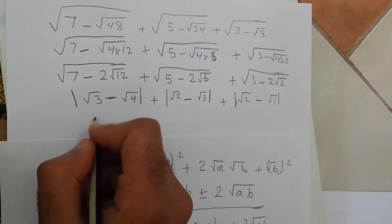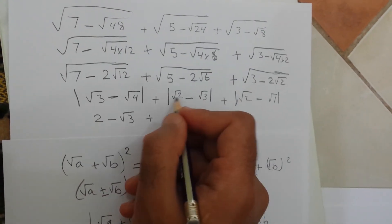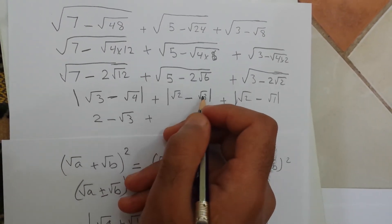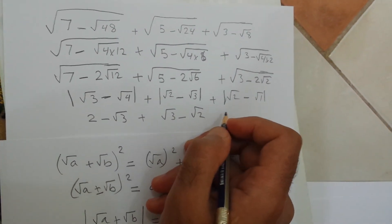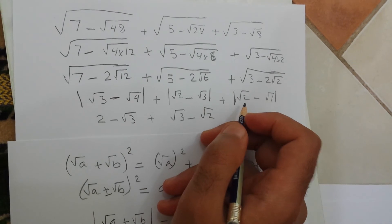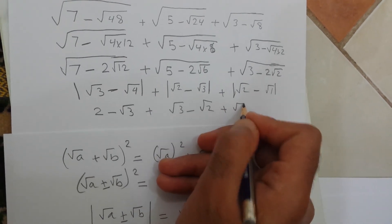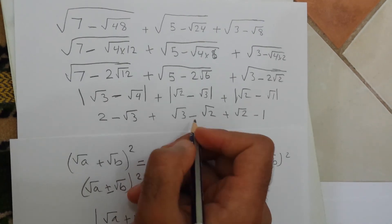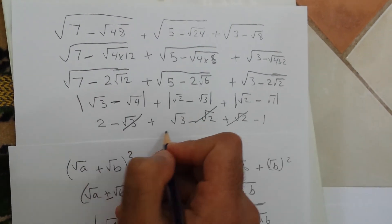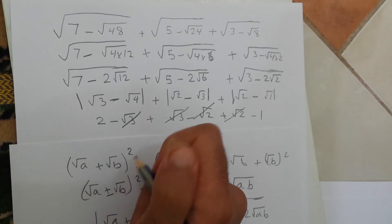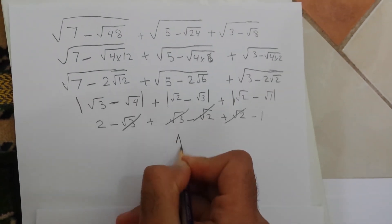The first expression gives root of 4 which is 2, minus root of 3. The second is also negative because root of 3 is greater, so we reflect it to get root of 3 minus root of 2. The last one, root of 2 minus root of 1, will be positive so we keep it. Now combining: minus root of 2, minus root of 3, plus root of 3, plus root of 2 minus one. Everything cancels and we get just 1.